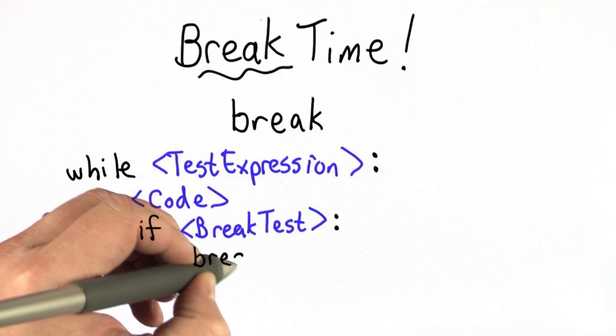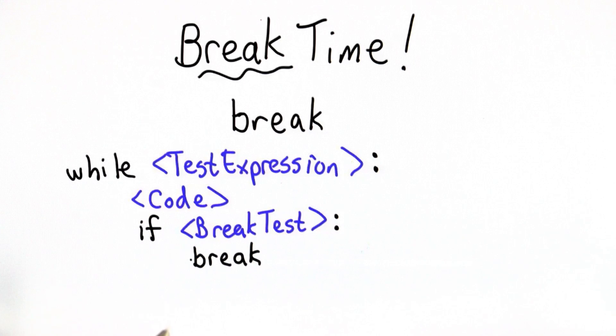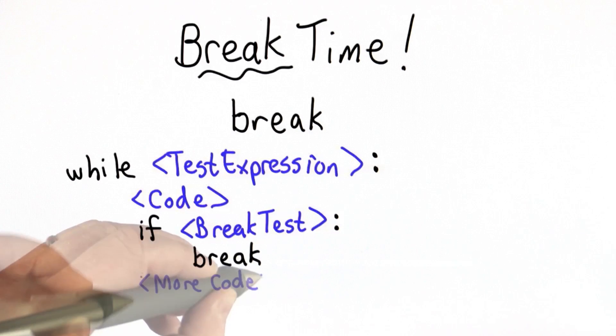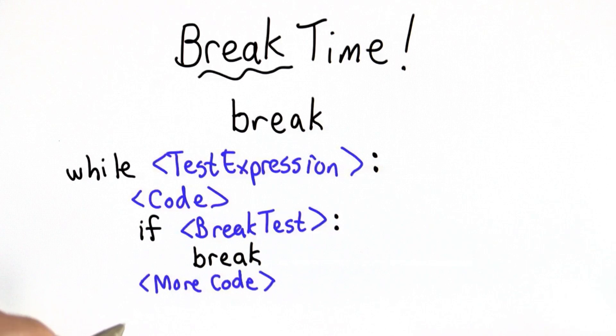Break by itself is all we need. What break means is stop executing the while loop, jump out of the while loop, and continue with the code after that. This more code in the while block gets skipped, and we'll jump to the code after the while.